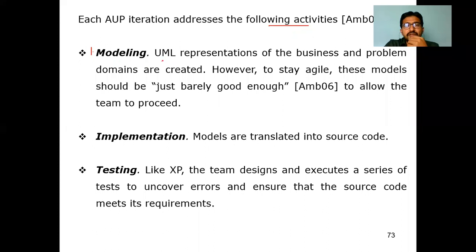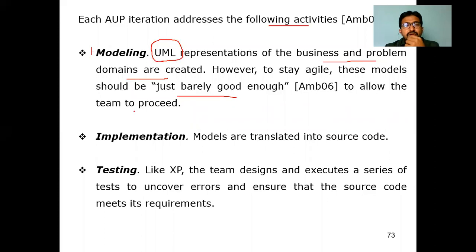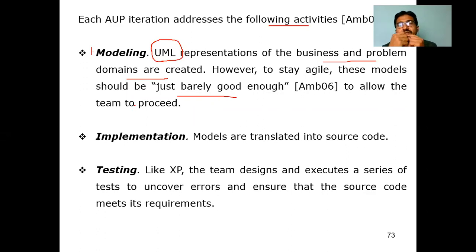In modeling, UML — Unified Modeling Language — is used to represent the business and problem domains. This representation needs to be just barely good enough to allow the team to proceed. It directly shows how the project will look using UML diagrams. In UML, we have different types of diagrams such as class diagram, object diagram, sequence diagram, activity diagram, collaboration diagram, and deployment diagram — nine different diagrams, with 13 available in newer versions.